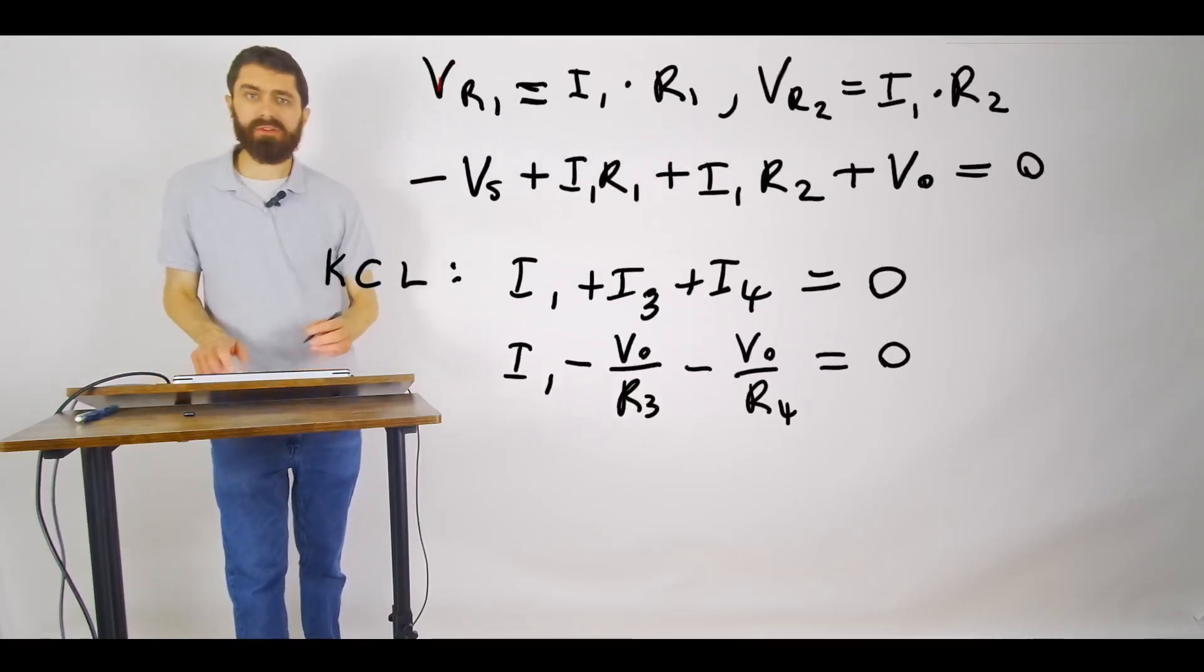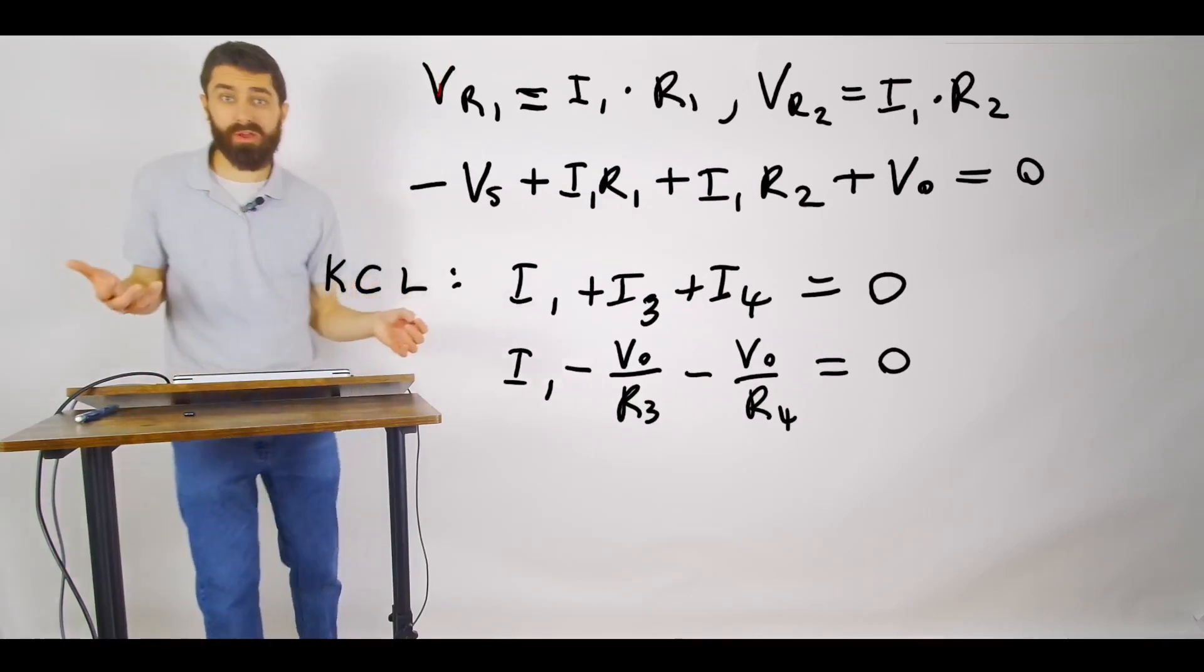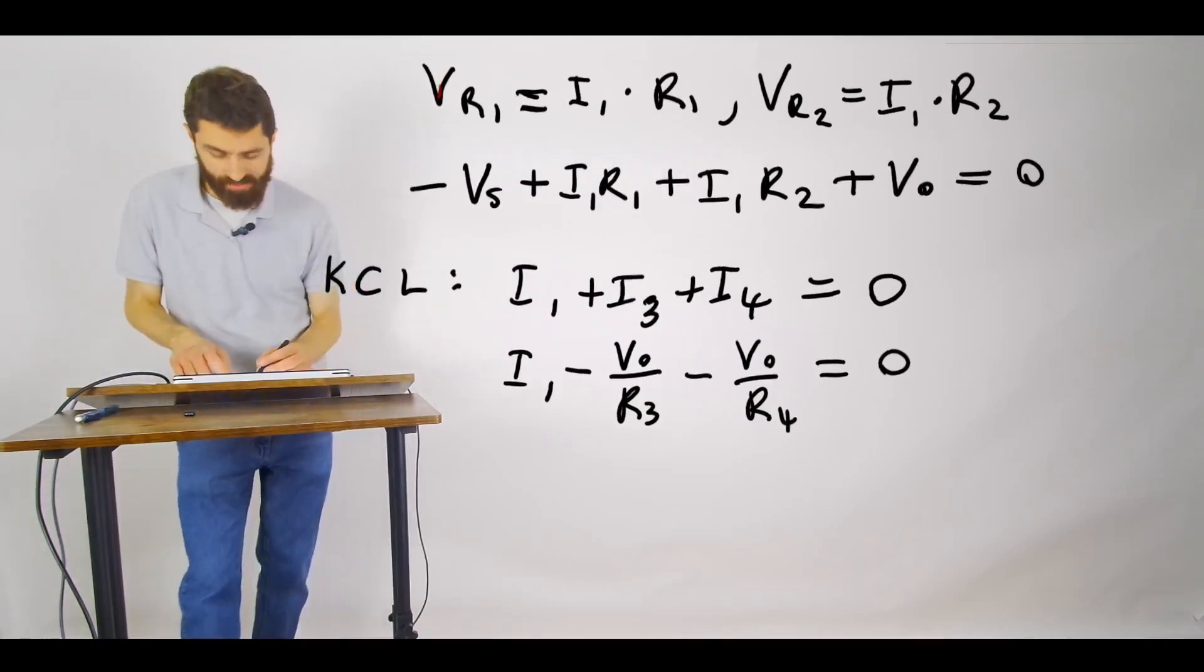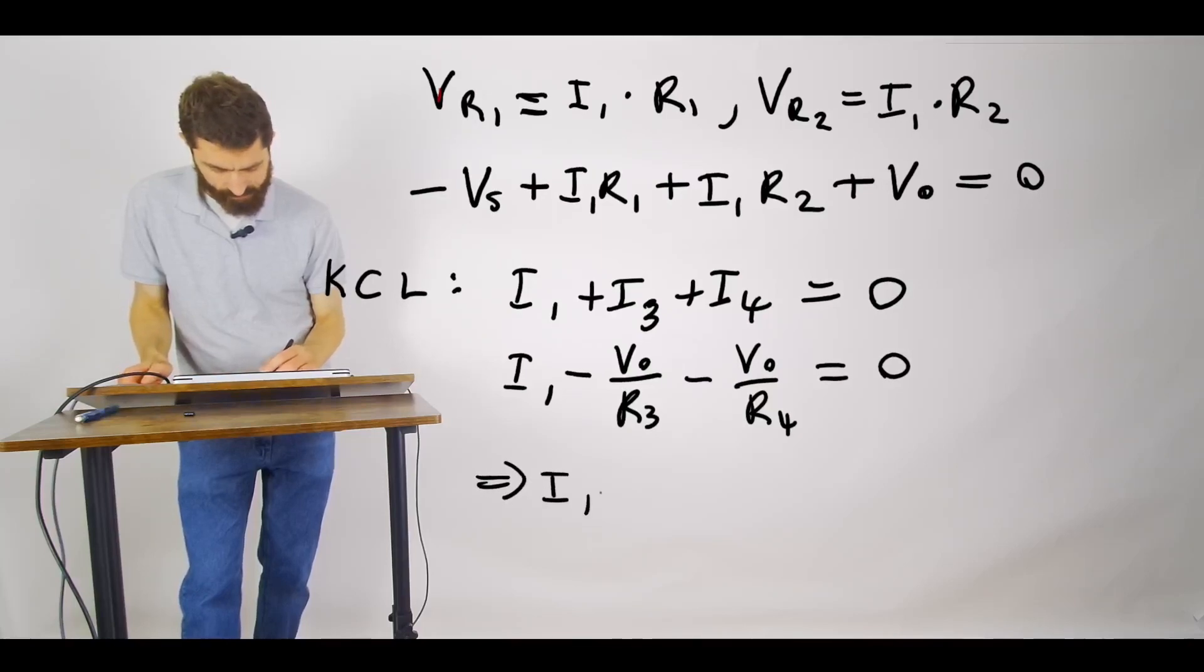So now you can see that we can actually solve for I1, which is what we need here. So I1 is equal to V0 over R3 plus V0 over R4.